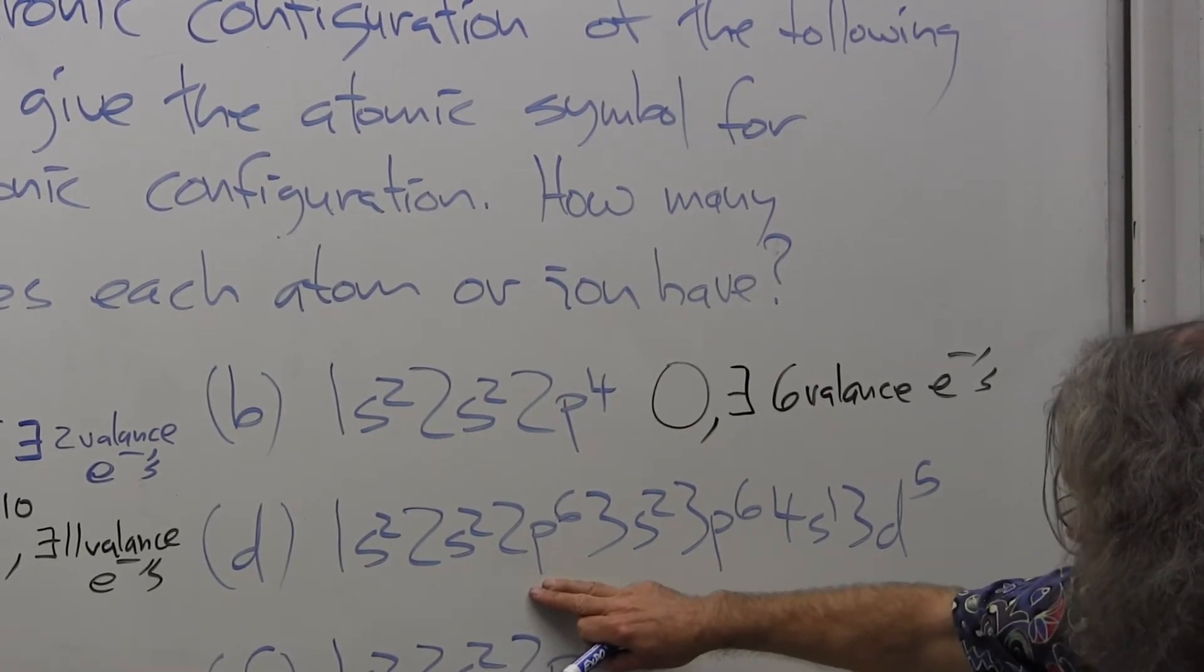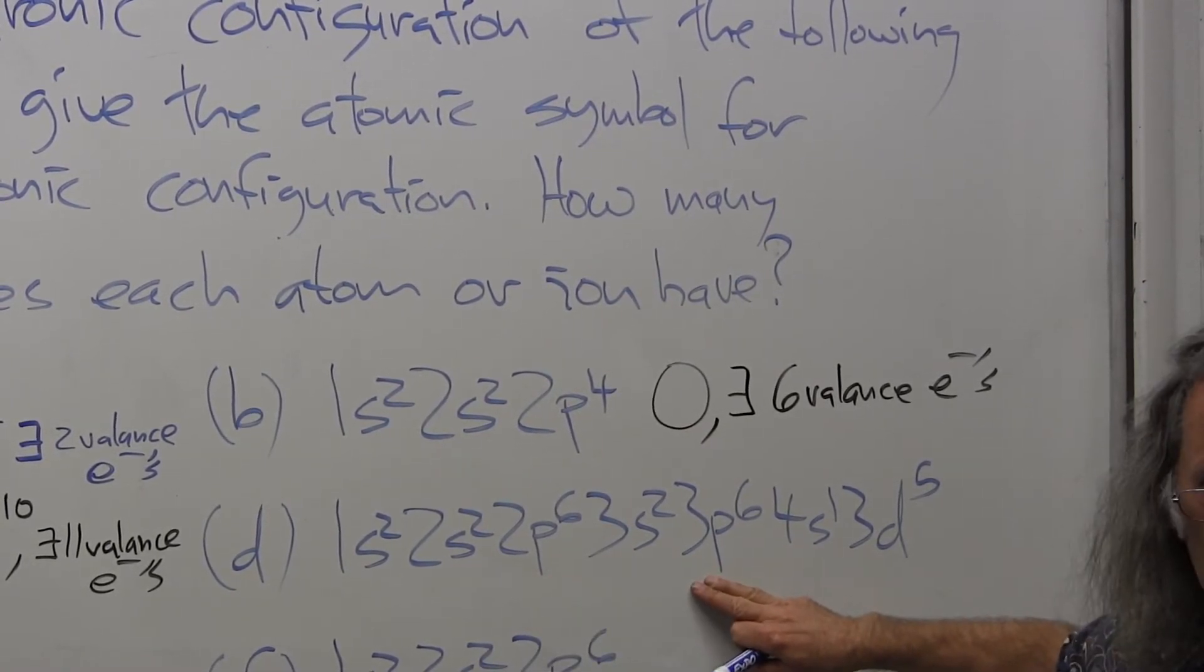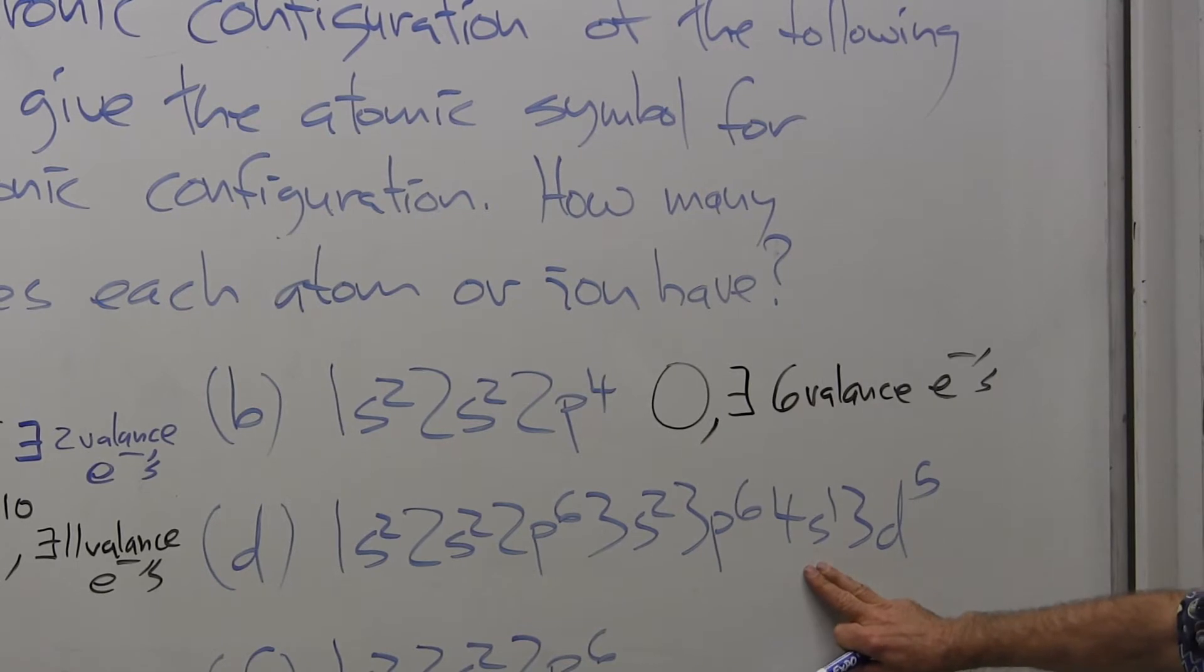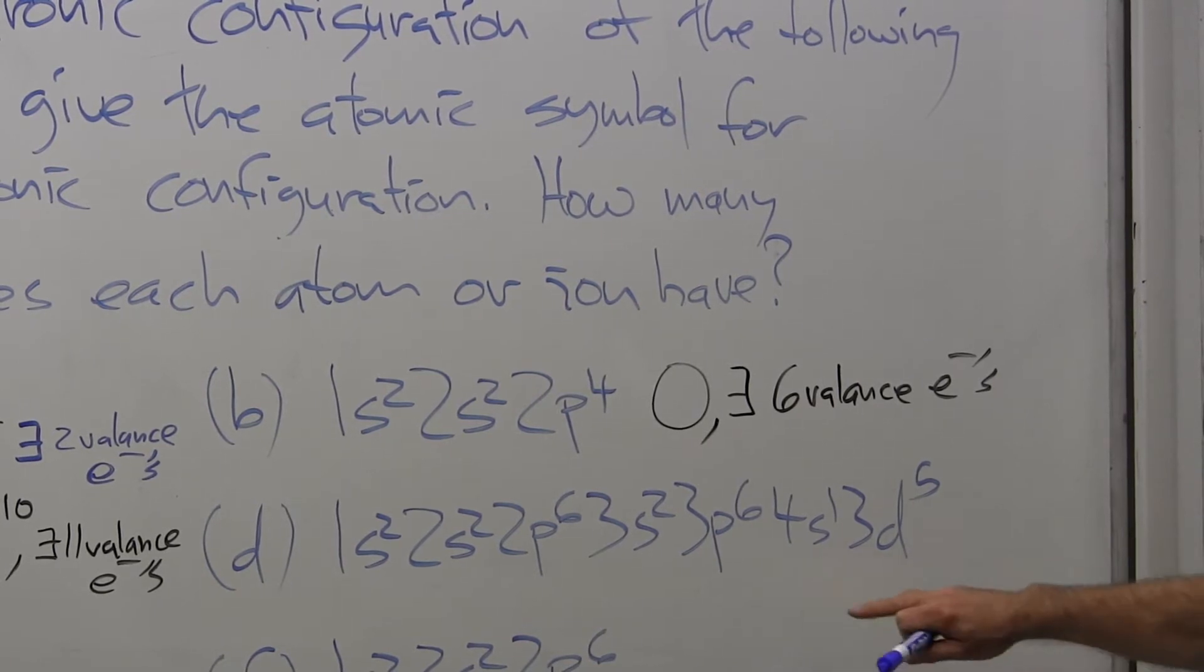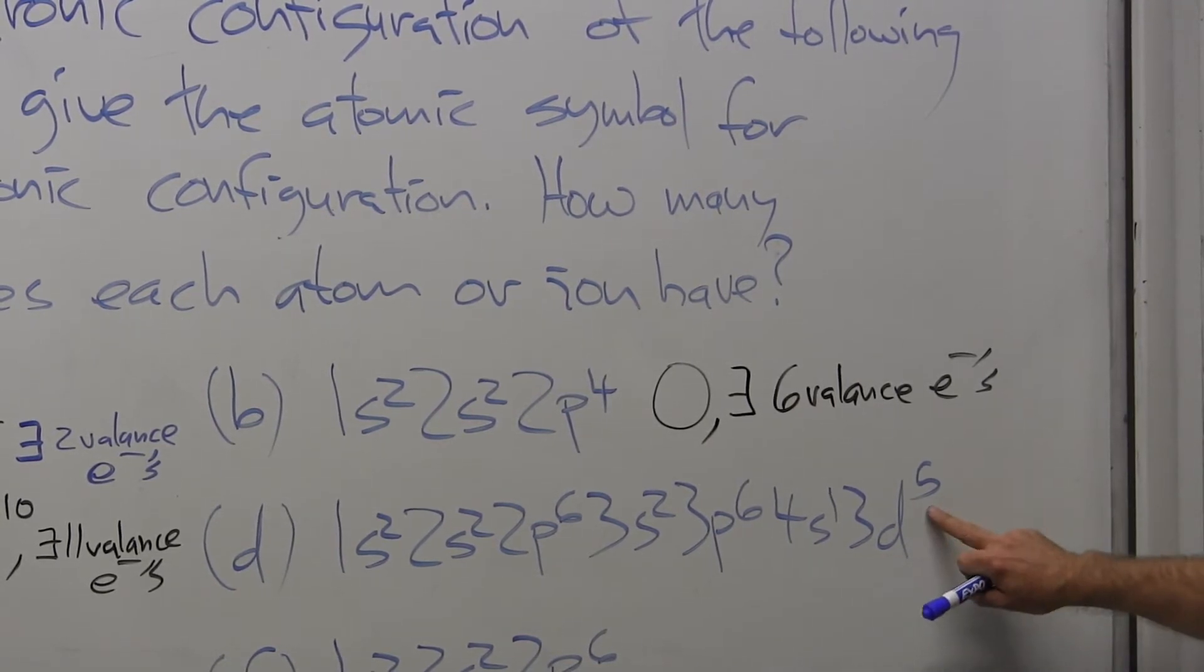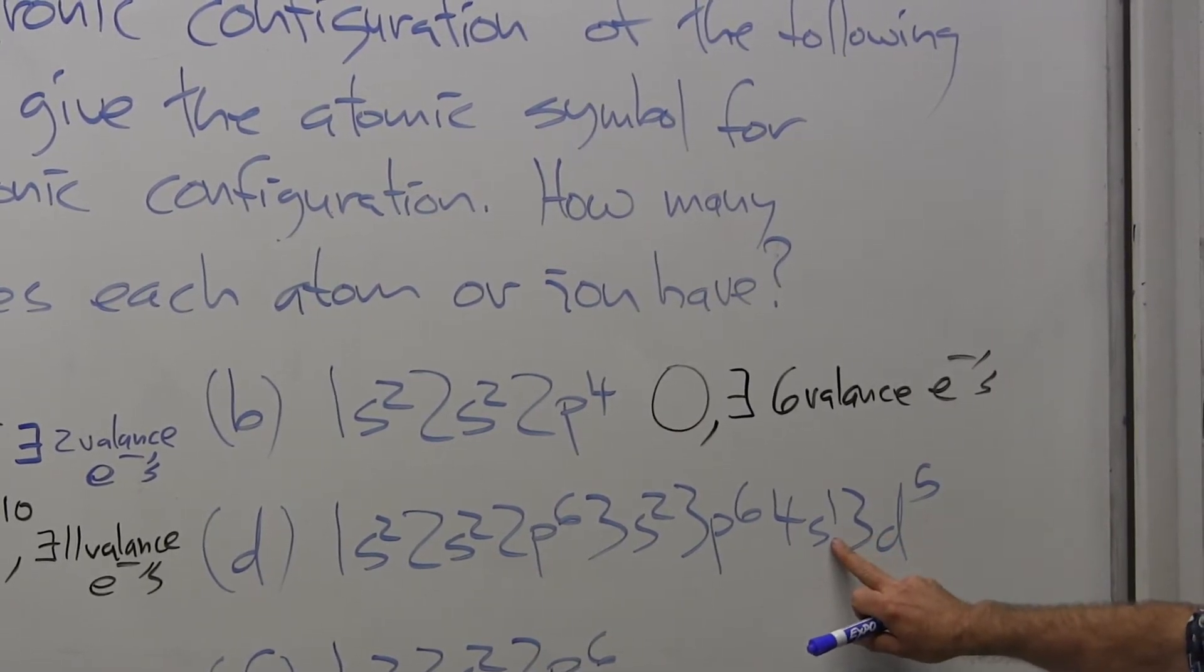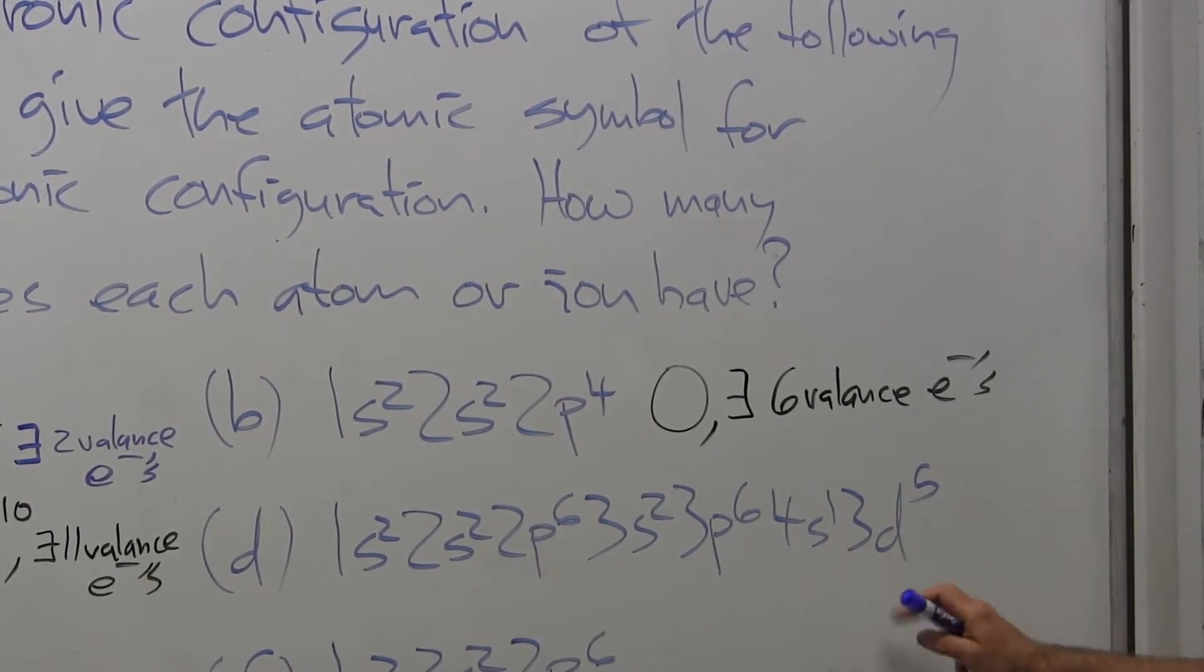Now I'm in the fourth row, and I've got a half-filled subshell. I've taken one of the 4s electrons, so that is going to be one of the exceptions we were discussing earlier.